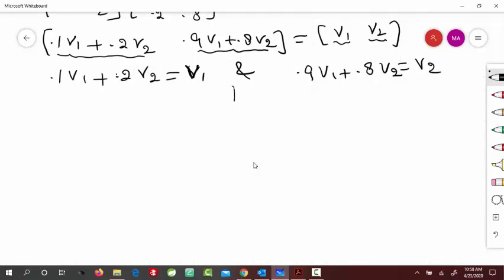So from here, if we simplify both these equations, so subtract 0.1 V1 on both sides. So this is 0, so 0.2 V2 is equal to...